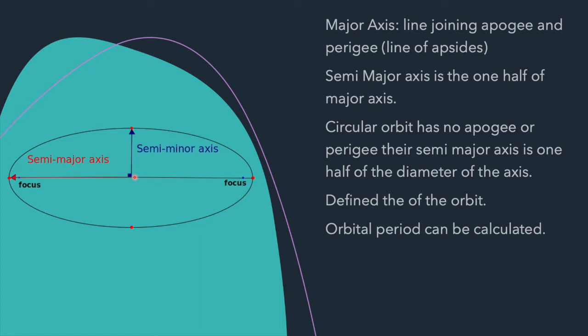When the foci come together, we have the special case of a circular orbit. A circular orbit has no apogee or perigee, and its semi-major axis is one half of the diameter. The semi-major axis is also denoted by small 'a' and gives the size of the orbit.